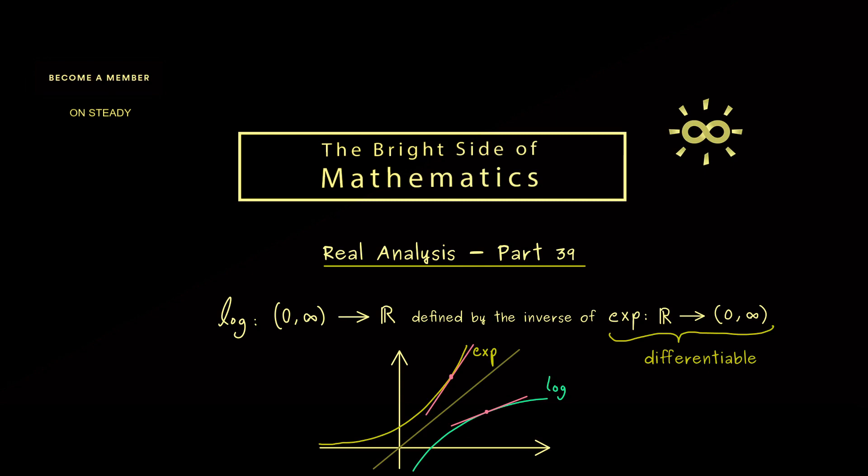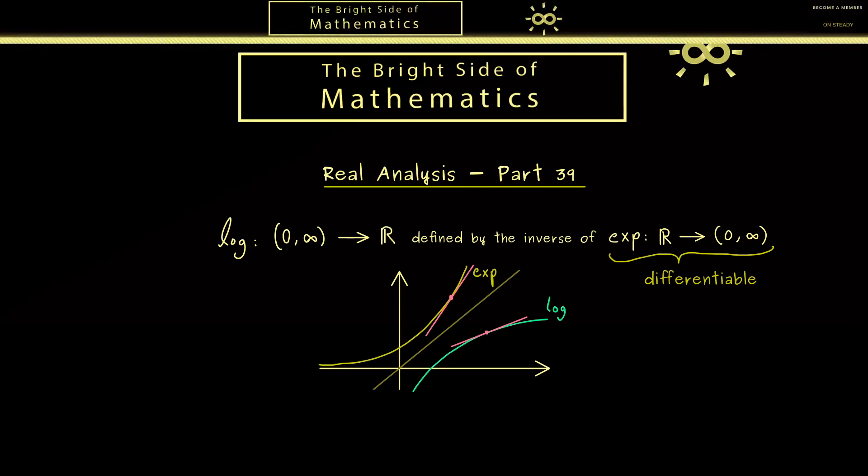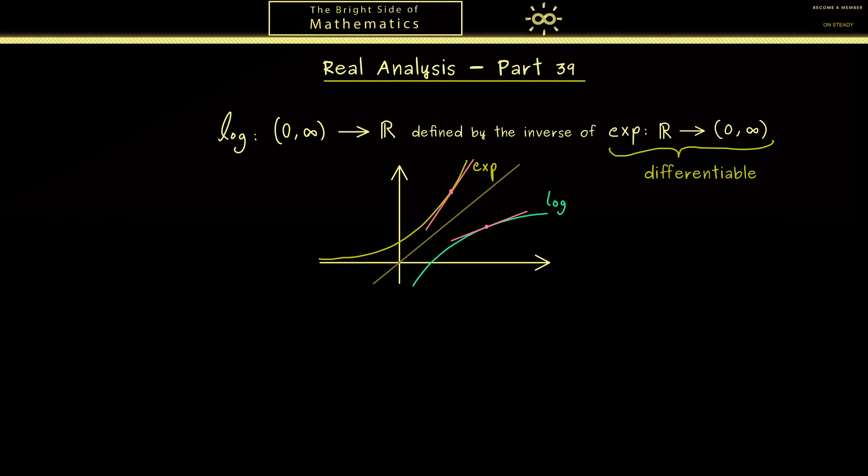Therefore the question for today is can we even do this in a general case where we just have an inverse function. In order to answer this, let's take two intervals I and J and a bijective function from I into J. Now by the definition of bijectivity we know there is a well-defined inverse function, and this f inverse goes from J into I.